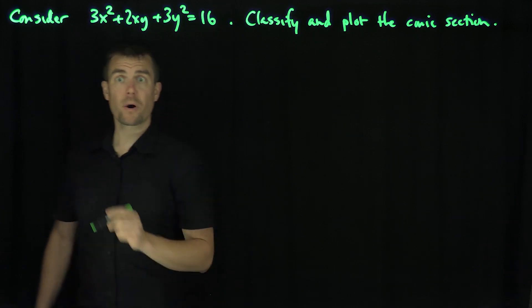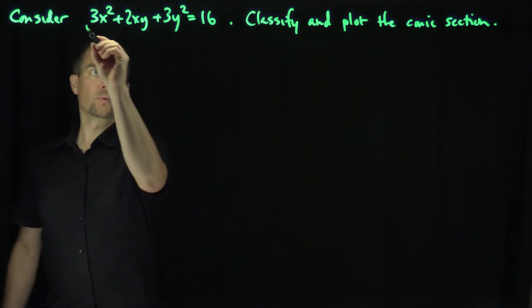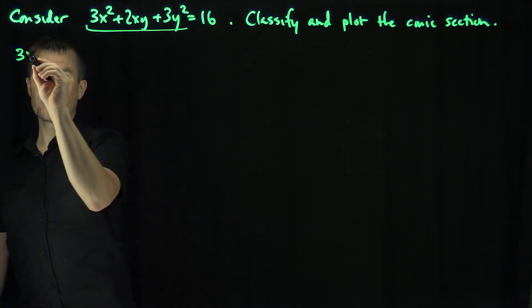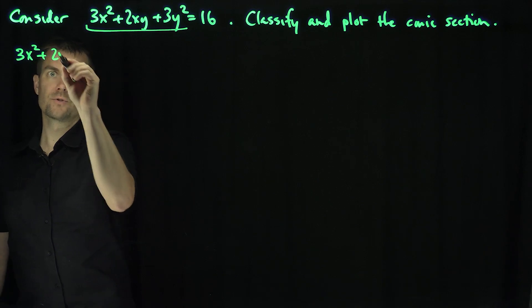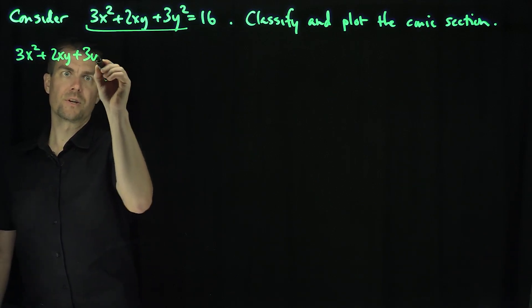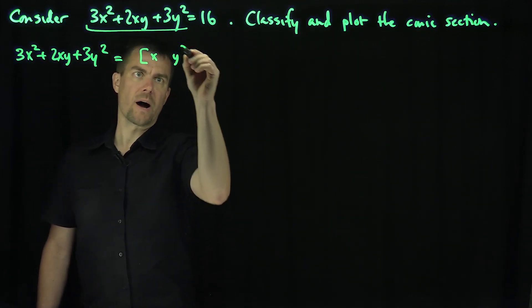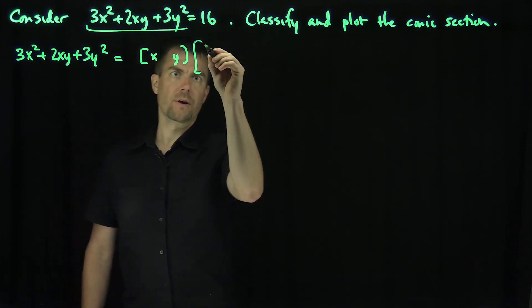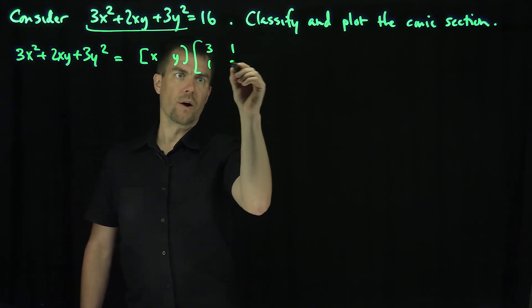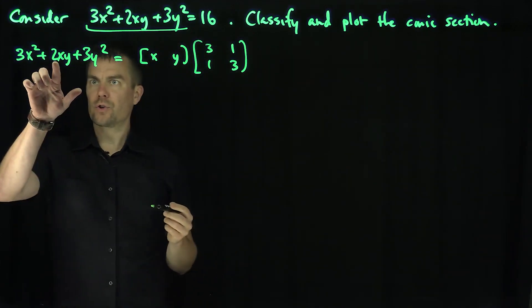The idea is to write the principal quadratic part as a quadratic form. We're going to take this and write 3x² + 2xy + 3y² as xy, and then the symmetric matrix [3, 1; 1, 3], because wherever there's a 2 here...